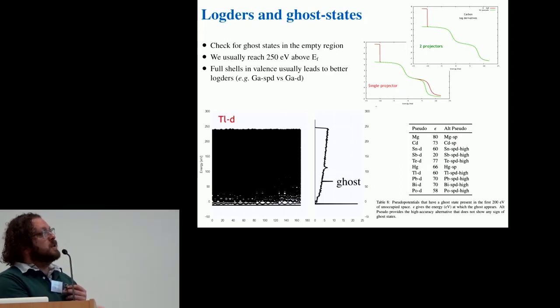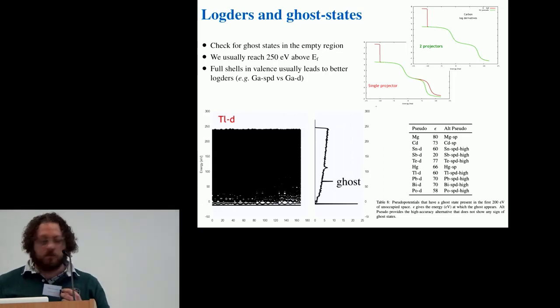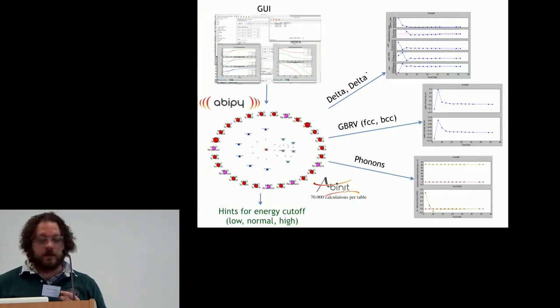So in the paper we explicitly mention that the pseudos should not be used for GW calculation and we provide some replacement that obviously is more expensive at the level of the number of electrons and the plane wave cutoff energy.